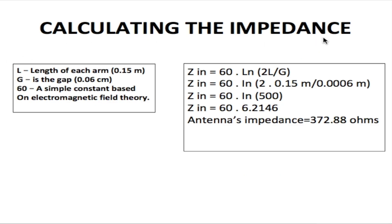Next we calculate the impedance of the antenna. It's important to know the impedance so you can match it to your coaxial cable — whether 50 ohms or 75 ohms — and select the right balun. The impedance formula is Z_in equals 60 times ln(2L divided by g), where L is the element length of 0.15 meters, g is the gap of 0.0006 meters, and 60 is a constant from electromagnetic field theory.